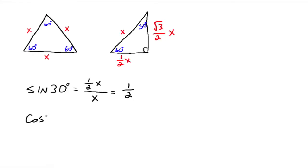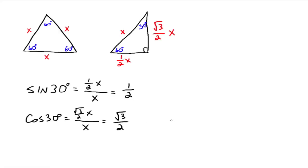What about the cosine of 30 degrees? That's adjacent over hypotenuse. Since this is the 30 degree angle, the adjacent side is the square root of 3 over 2 times x, and all that's over the hypotenuse, which is x. That simplifies to the square root of 3 over 2. So the cosine of 30 degrees is always the square root of 3 over 2.